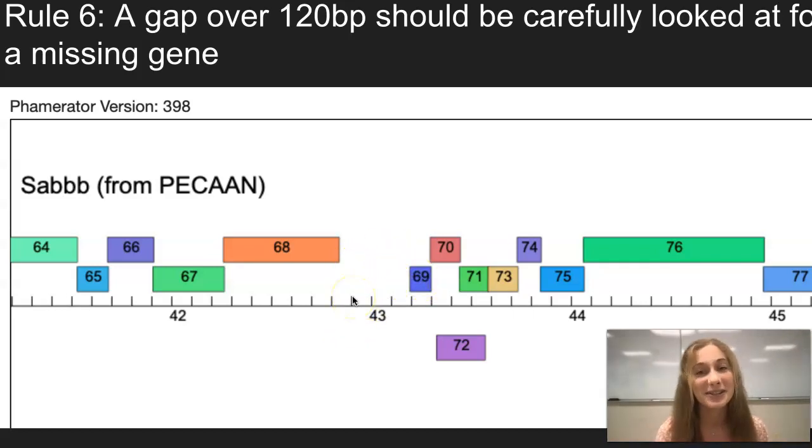So this signifies that when there's a large gap over 120, that you should look back at it because there could be a gene that was not identified by Glimmer or GeneMark.